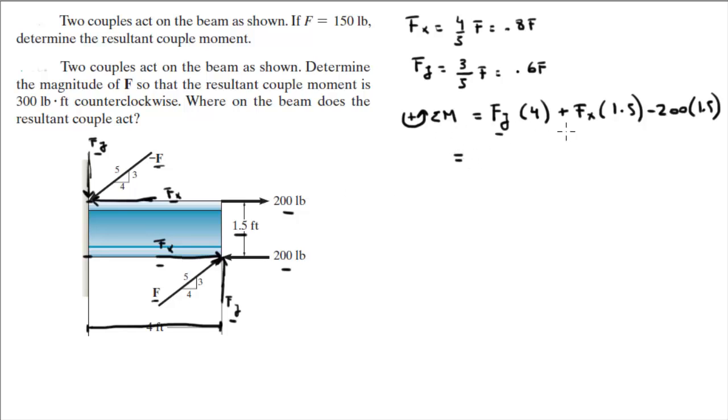So you replace f_y and f_x by these values, and you get that 0.6f times 4 plus 0.8f times 1.5, minus 200 times 1.5. And all of this is equal to 3.6f, minus 300. That is sum of moments. Of course, assuming counterclockwise is positive.